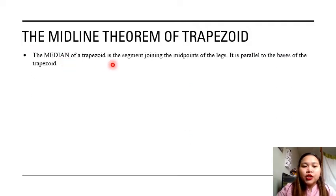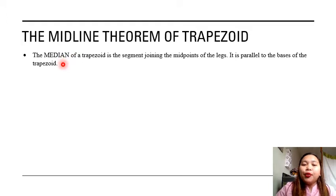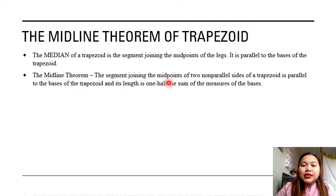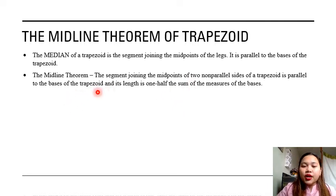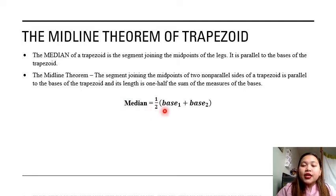The median of a trapezoid is the segment joining the midpoints of the legs. It is parallel to the bases of the trapezoid. The midline theorem states that the segment joining the midpoints of two non-parallel sides of a trapezoid is parallel to the bases of the trapezoid, and its length is one half the sum of the measures of the bases. So the formula for getting the median of a trapezoid is: median equals one half times the quantity base 1 plus base 2.